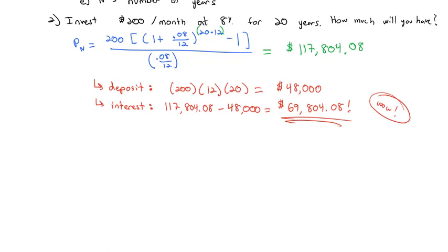The $117,804.08 in the account minus the $48,000 that I actually put in myself means I earned $69,804.08 in interest over 20 years. I've more than doubled my money in that 20 years. And that's why these annuities are considered a really good investment for retirement — because if you're investing for 20, 30, or 40 years, you can get a very large return on your investment.